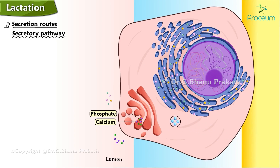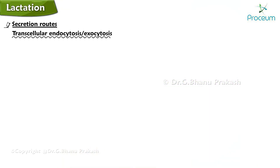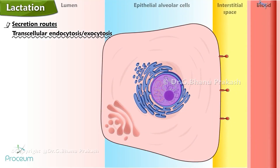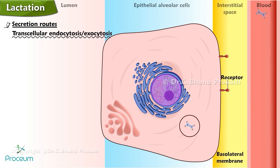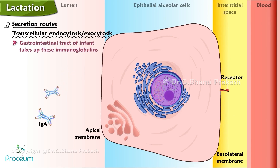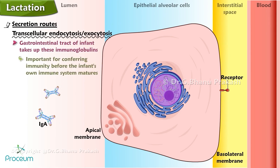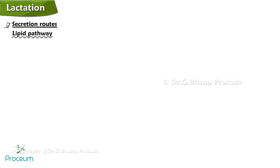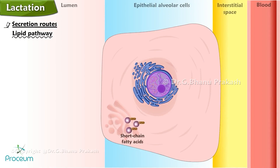Water enters the secretory vesicle by osmosis, and finally exocytosis discharges the contents of the vesicle into the lumen of the alveolus. In the transcellular endocytosis-exocytosis pathway, the basolateral membrane takes up maternal immunoglobulins by receptor-mediated endocytosis. Following transcellular transport of these vesicles to the apical membrane, the cell secretes these immunoglobulins — primarily IgA — by exocytosis. The gastrointestinal tract of the infant takes up these immunoglobulins, which are important for conferring immunity before the infant's own immune system matures.